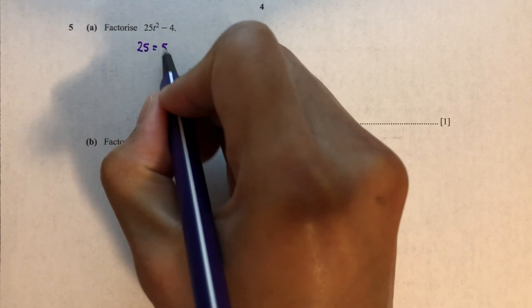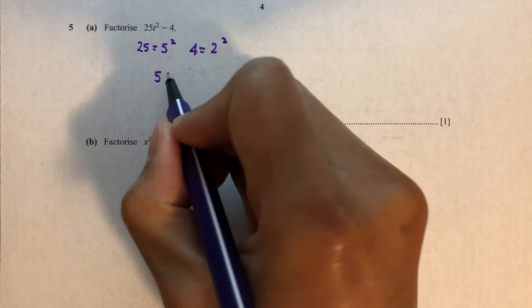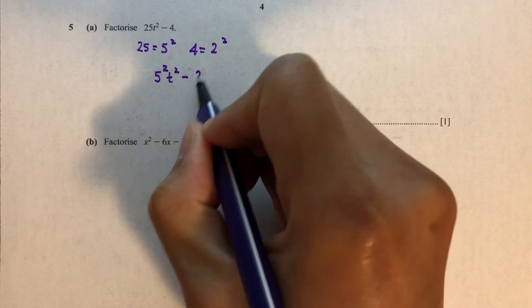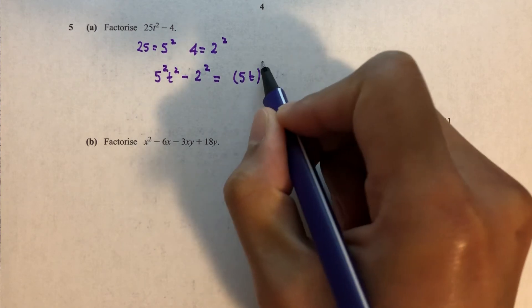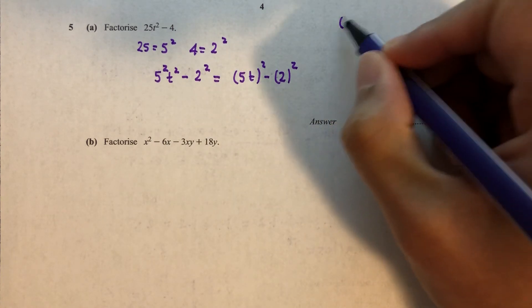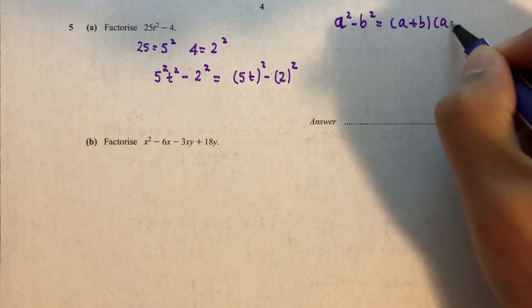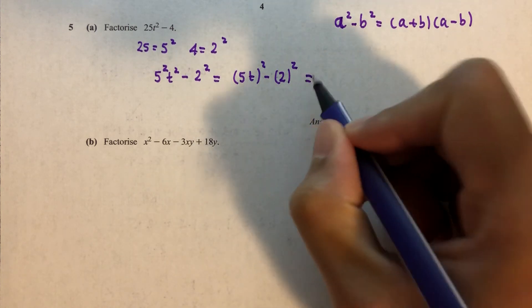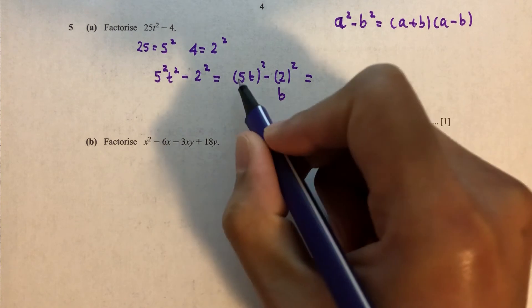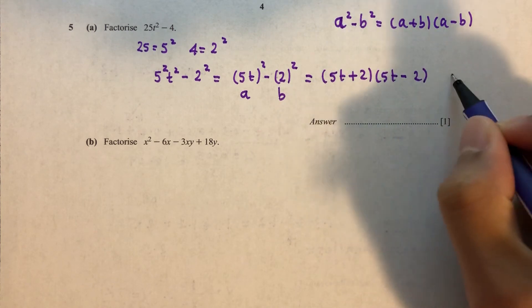Question 5 part A: factorize 25t squared minus 4. We can see that 25 is 5 squared and 4 is 2 squared. So we have 5t squared minus 2 squared. Using the identity A squared minus B squared equals A plus B times A minus B, where A is 5t and B is 2, the answer is 5t plus 2 times 5t minus 2.